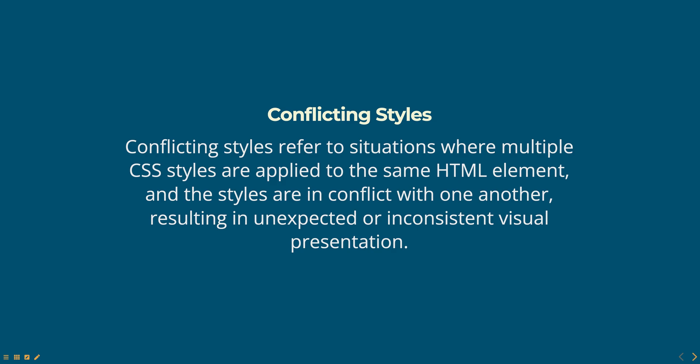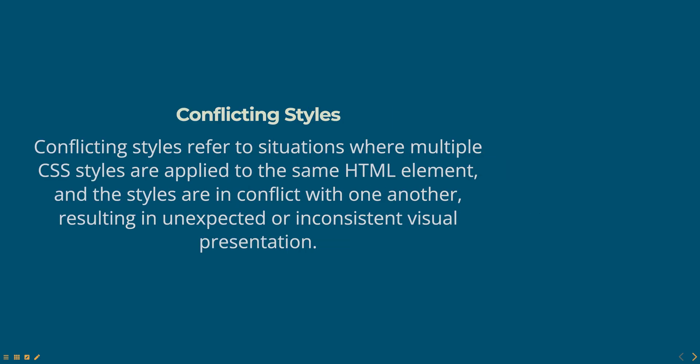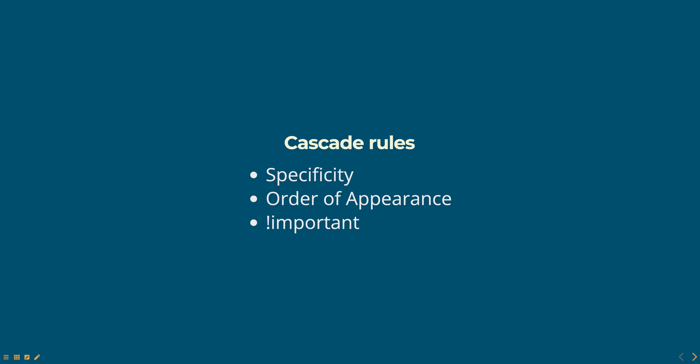CSS has a set of rules that determine which style will be applied when multiple styles are conflicting. These rules are known as the cascade, and they could include specificity. The more specific a selector is, the higher its specificity. For example, an ID selector has a higher specificity than a class selector.